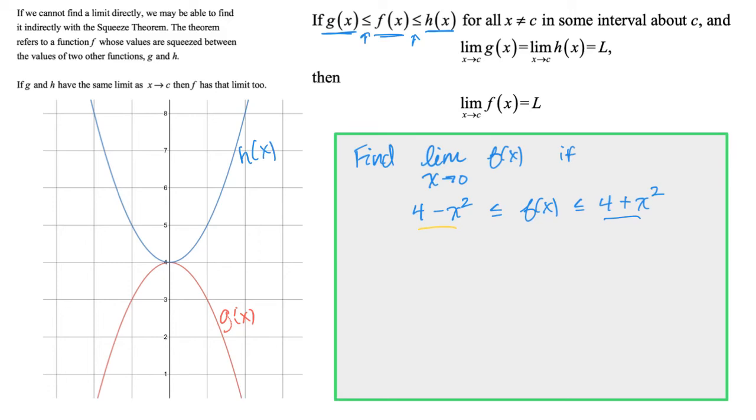The squeeze theorem says f of x is between these two functions. We don't know what this function is. This middle function could be anything. It could come down like this. It could be crazy. But we do know that it goes in between h of x and g of x. It could even be as big as this. We don't know.